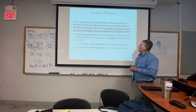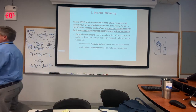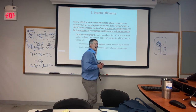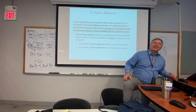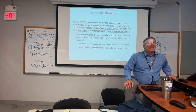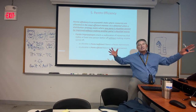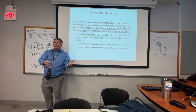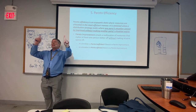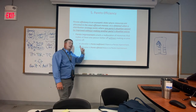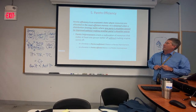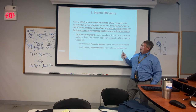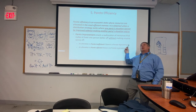Pareto improvement: is it possible to make a governmental change that everybody agrees on? Pretty hard to do, especially in complex systems. A Pareto improvement is a change such that at least one person is better off without making anybody else worse off. If there is an opportunity to do that, you should. A Pareto inefficiency exists when a Pareto improvement could be made — meaning the status quo is inefficient.